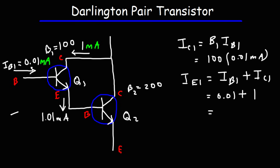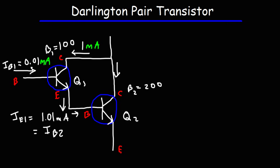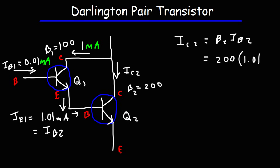IE1 is the same as IB2, because that's the same amount of current that's entering the base of Q2. So now that we know IB2, we can calculate IC2 — the current flowing to the collector of the second transistor. IC2 equals beta 2 times IB2, so that's 200 times 1.01 milliamps, which gives us 202 milliamps.